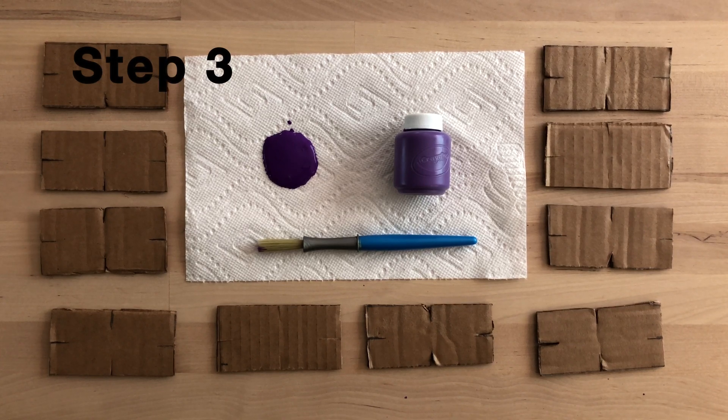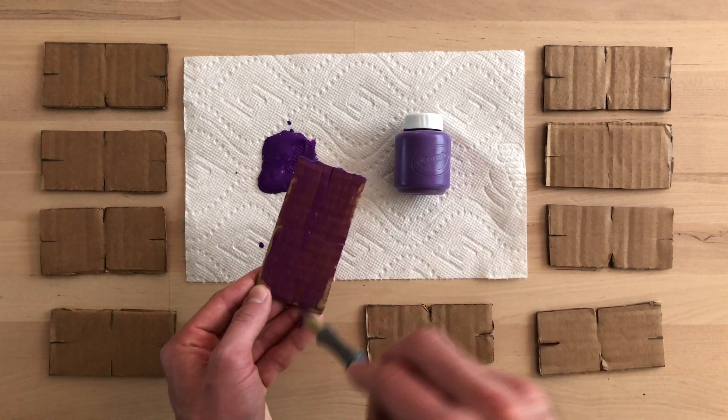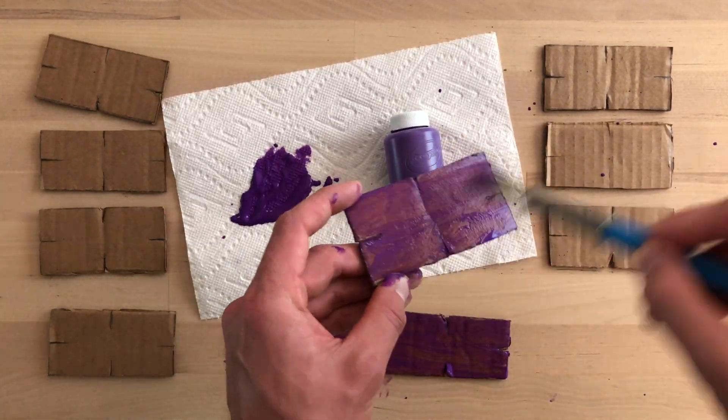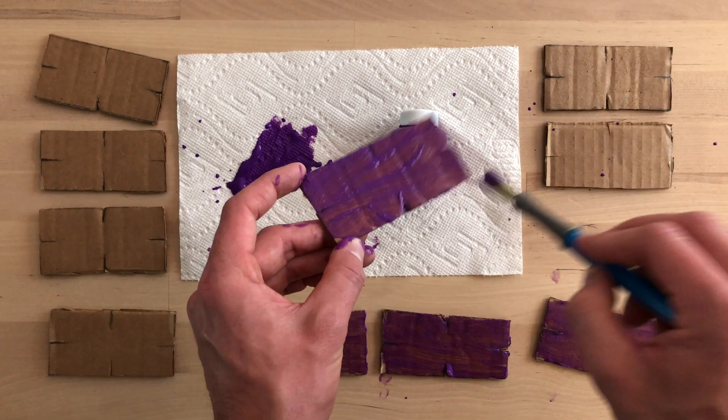Step 3. I chose to paint my constructors. If you do not have access to paint, that's okay. You can use colored pencils, crayons, or any other kind of decorative materials.